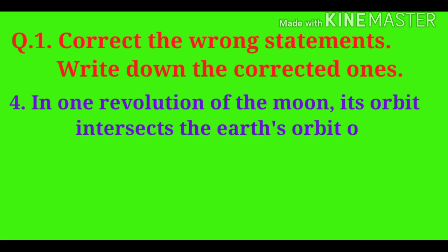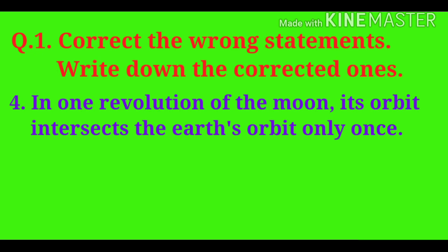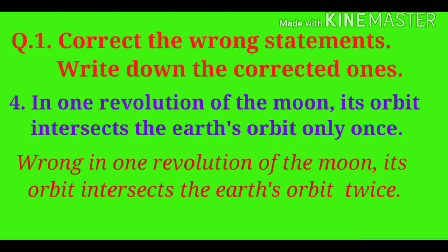Fourth statement: In one revolution of the moon, its orbit intersects the earth's orbit only once. Wrong. Correction: In one revolution of the moon, its orbit intersects the earth's orbit twice.